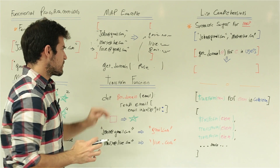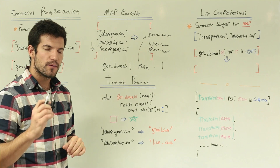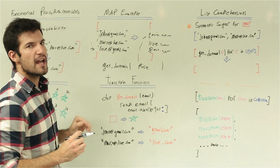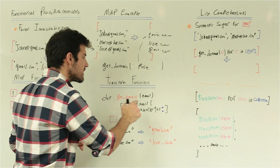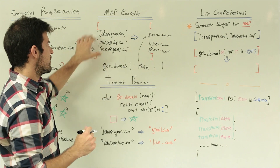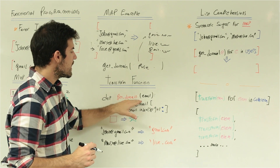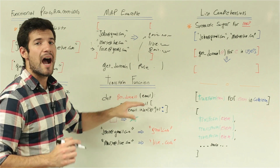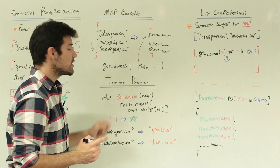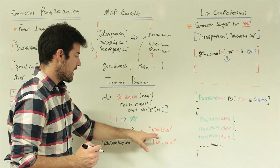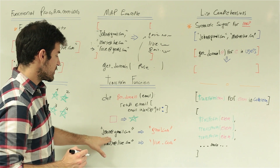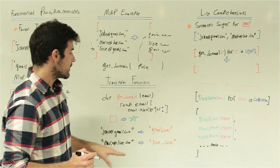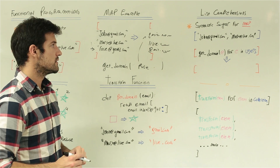Let's talk for a second about the transformation function. The transformation function should be defined for just one element — a single element in the collection. In this case, the get_domain function is defined to receive an email address and it will return a domain. For example, sean@gmail.com applied to the get_domain function will give you gmail.com.